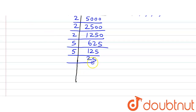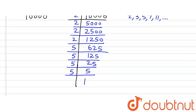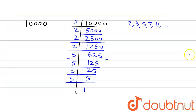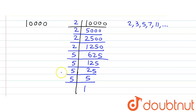Further, 25 is divisible by 5, so 5 × 5 = 25. Then 5 ÷ 5 = 1. We have reached 1, so we stop here. Now we write down 10000 as a product of its prime factors.